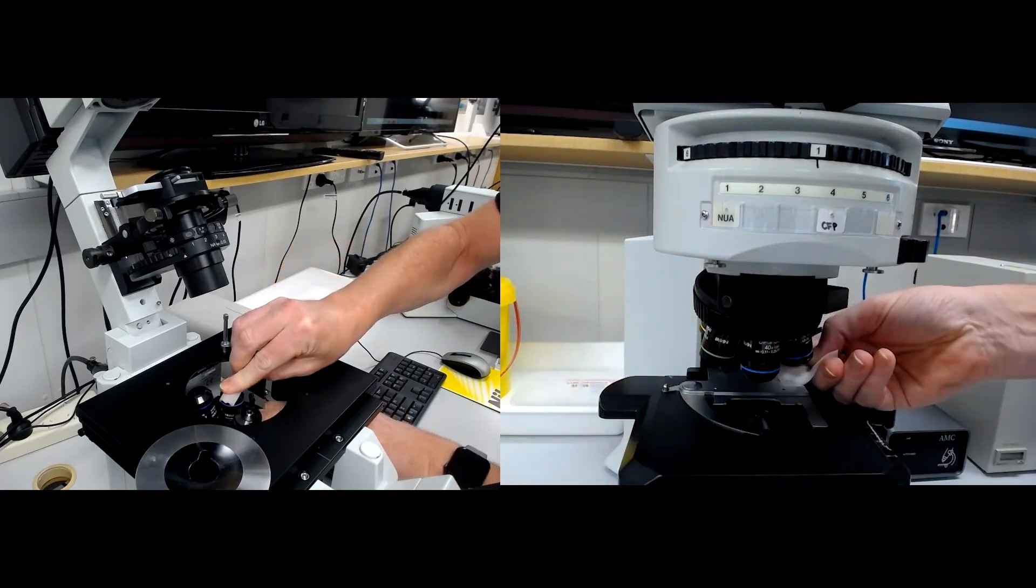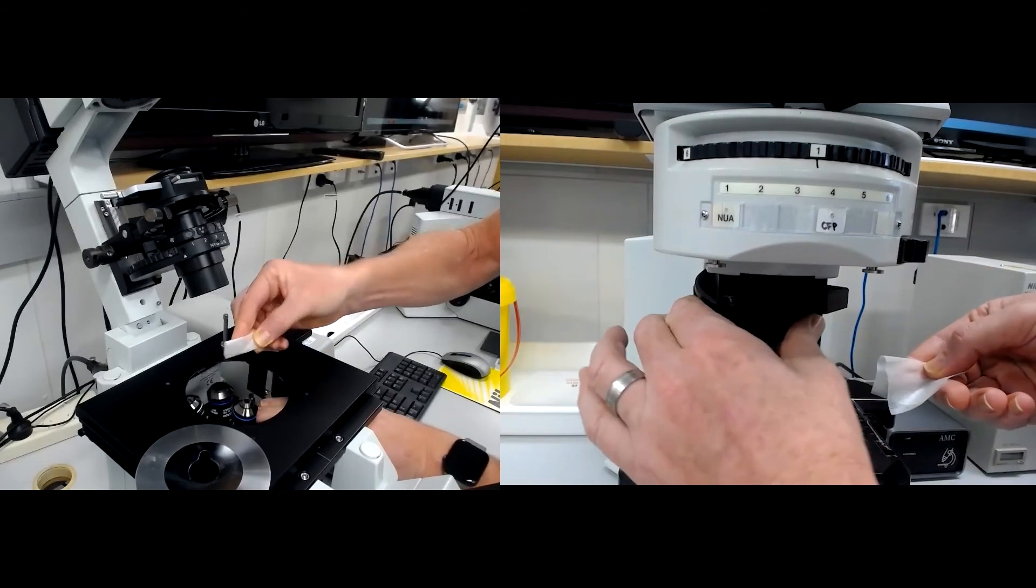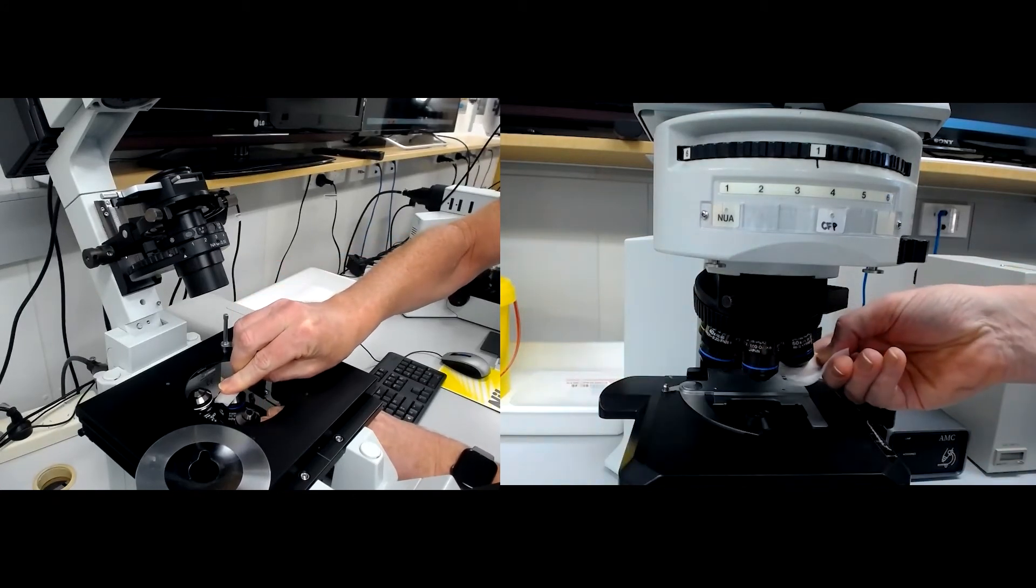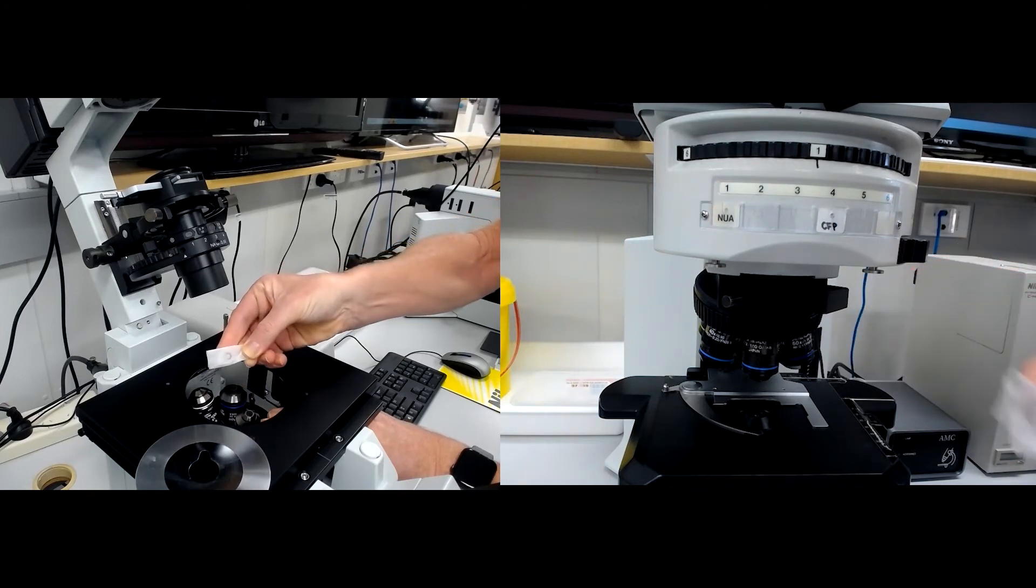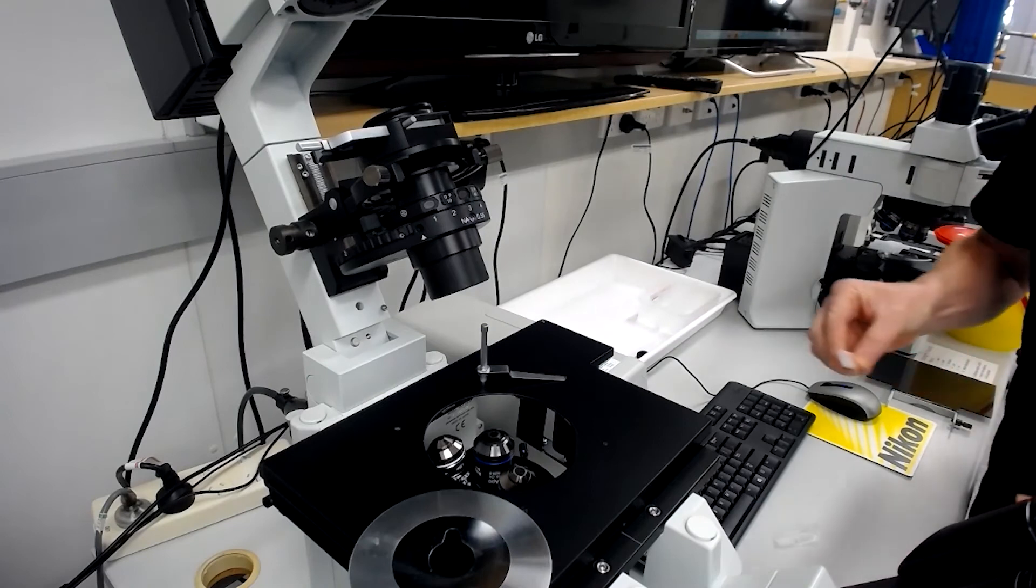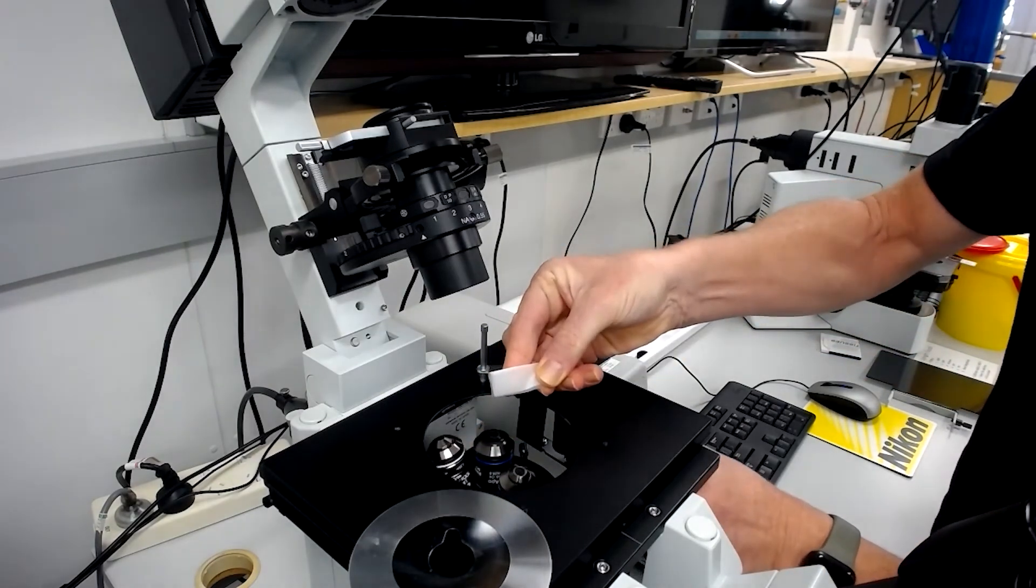Check that the tissue does not have any oil residue. If it does, get a new piece of lens tissue and repeat the cleaning process. It should not have any oil after the second pass, but if it does, get a new tissue and repeat the process.